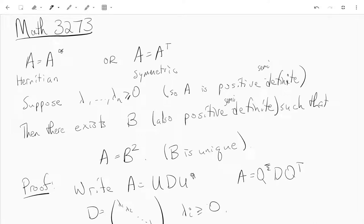Hi everyone, this is a video for Math 3273 and here we want to see why if we have a positive semi-definite matrix, how do we take its square root?